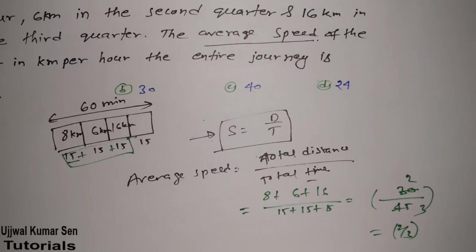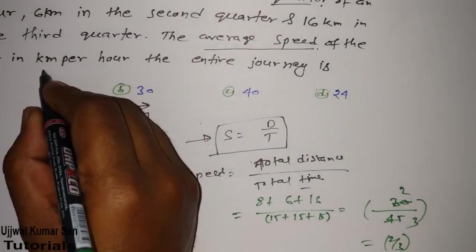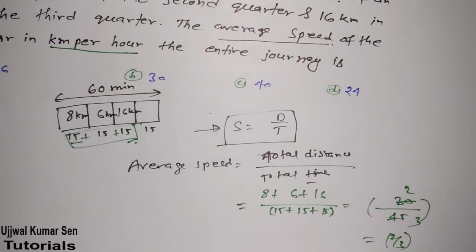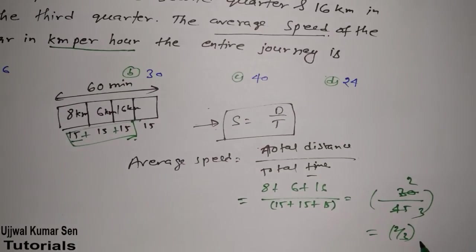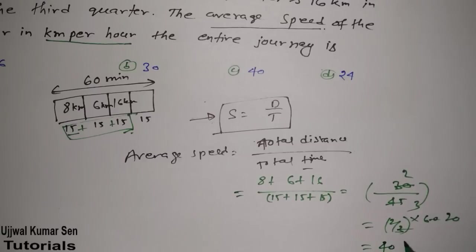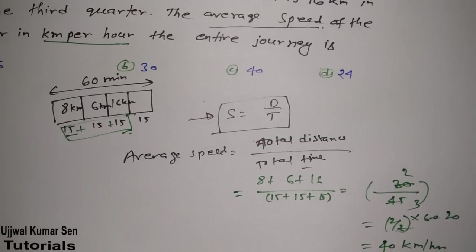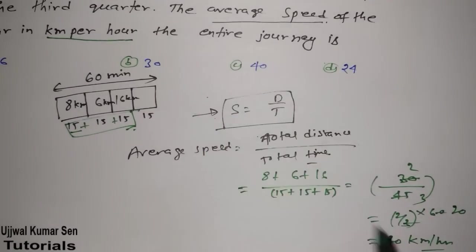The issue is that we took the time in minutes but we need to find the answer in kilometers per hour. The distance is in kilometers, but the time is in minutes. So we need to multiply by 60 to convert: 30 divided by 45, then multiplied by 60, gives us 40 kilometers per hour. That is the average speed.